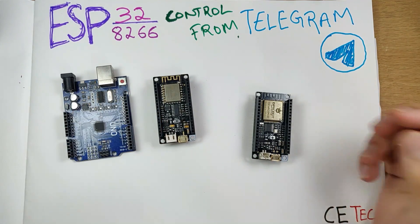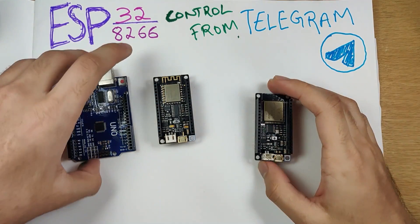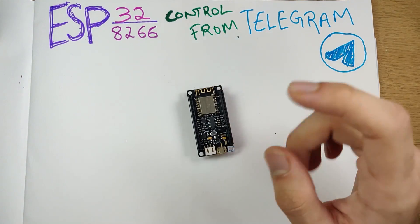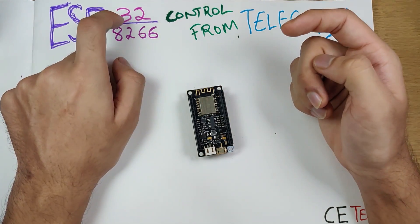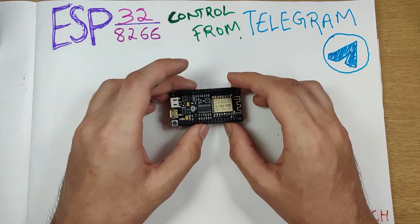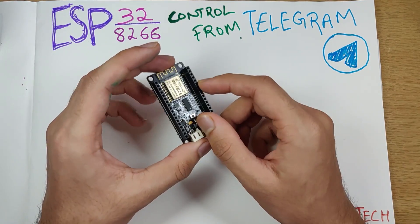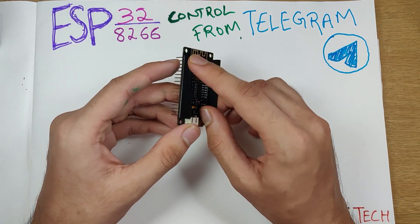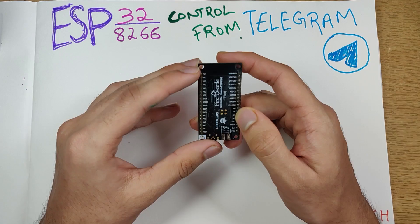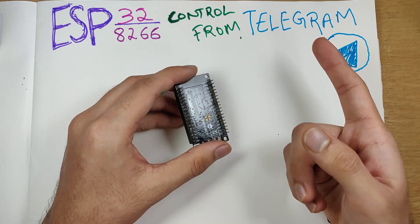For this project you can use any of the modules — the ESP8266, the ESP32, or the Arduino. I recommend using either of the ESP modules, and today I'll be using the ESP8266 as it is more popular. Basically, we'll be using Telegram to control some of the GPIO pins of the ESP module. We also have one analog input at the A0 pin, and we'll be looking at the value it reads on the Telegram app as well.